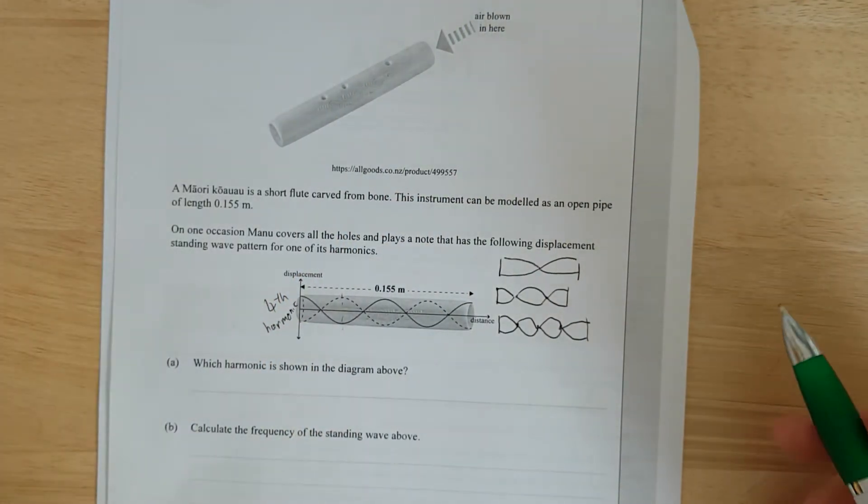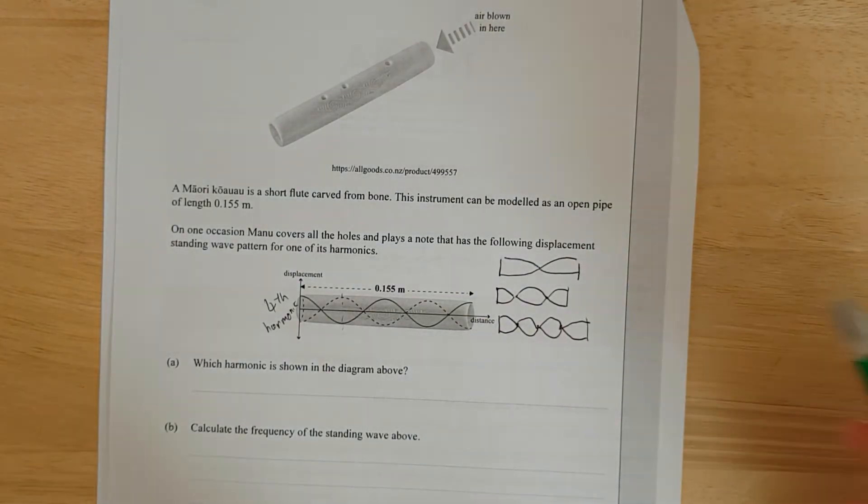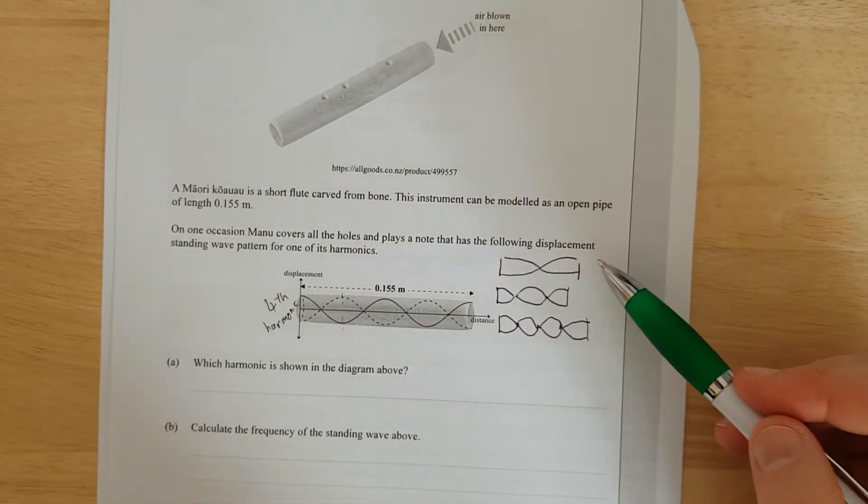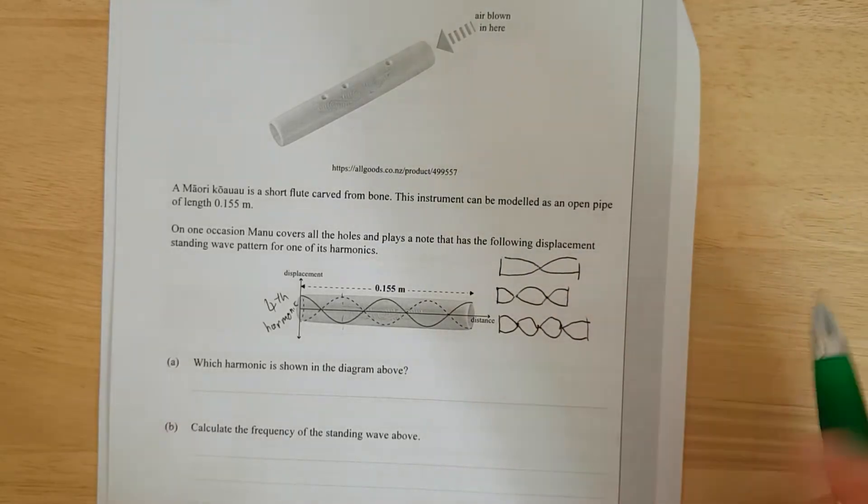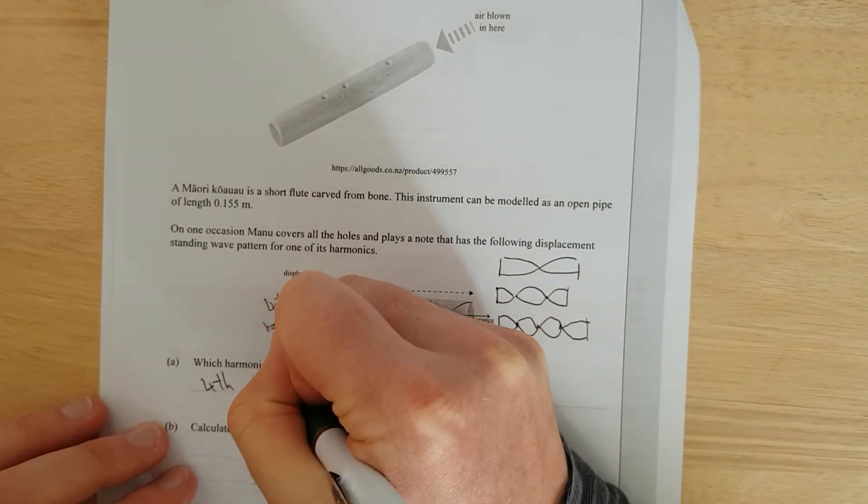And not to get confused with the overtones. The overtones are literally the notes that can be possibly played. This is an open-open. So it's going to be fundamental, first overtone, second overtone, third overtone. Right, this is the fourth harmonic.